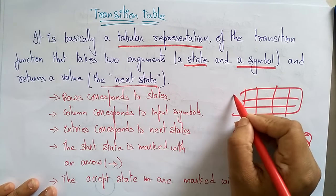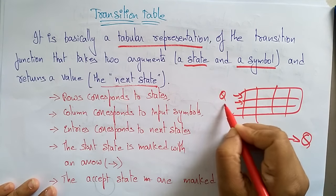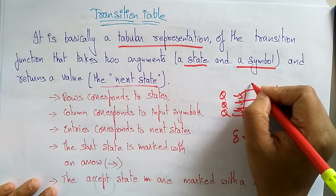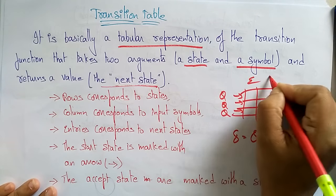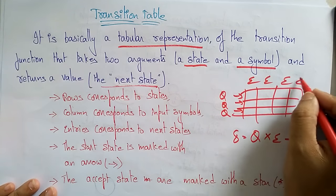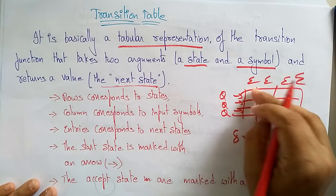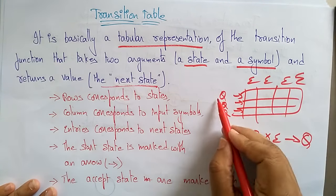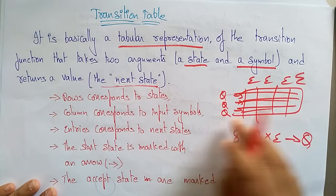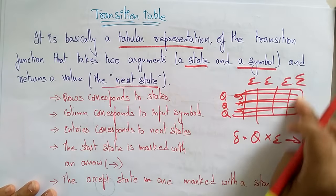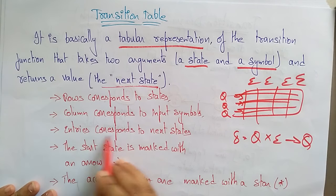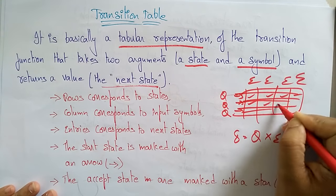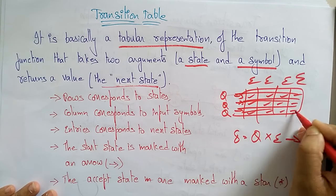In the transition table, rows correspond to the states and columns correspond to the input symbols — 0, 1, or whatever alphabets are defined. The entries in the table represent the next state reached from a given state on a given input symbol.